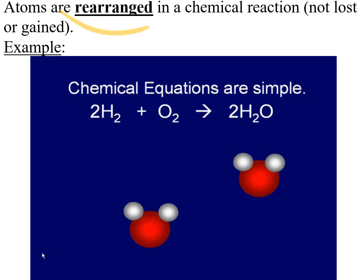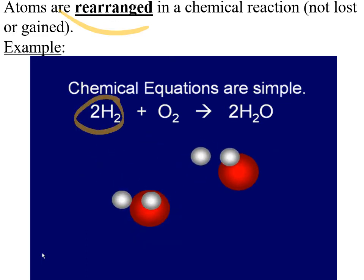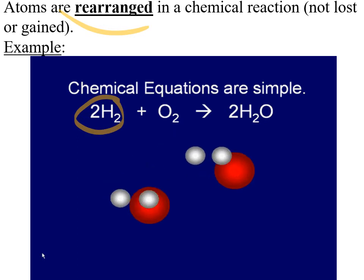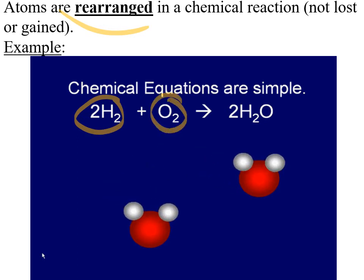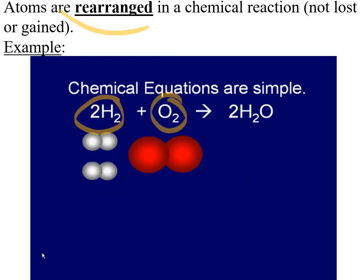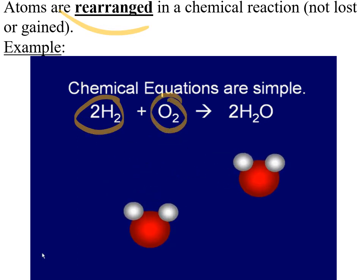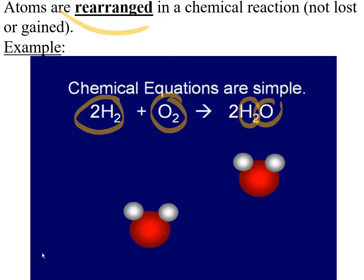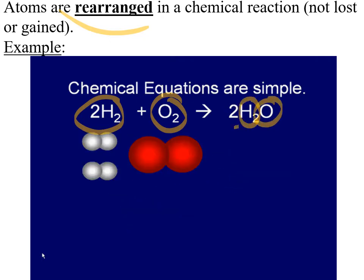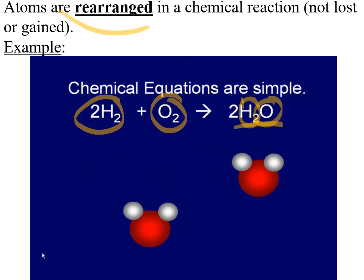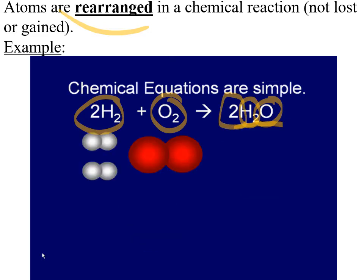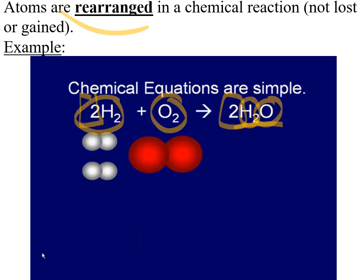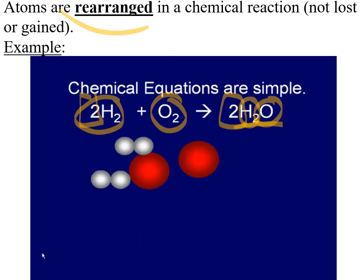If you think of this visually, we are basically just rearranging those atoms. For example, we have two hydrogen molecules and an oxygen molecule. You can see they get broken apart, and those two hydrogens end up attaching to one oxygen. The numbers out front tell us how many of each of those species there are.